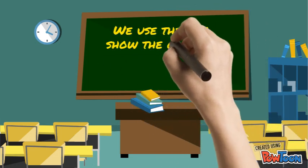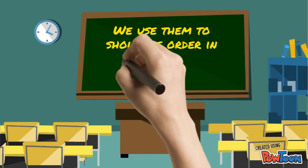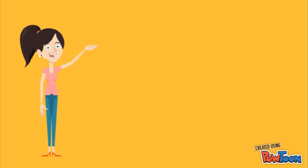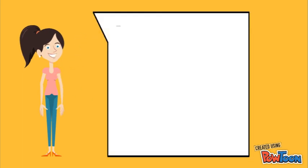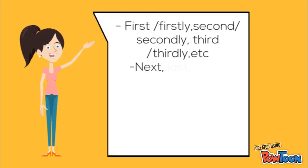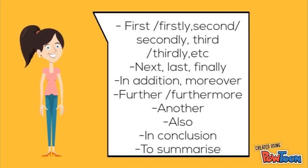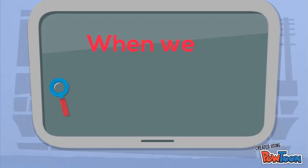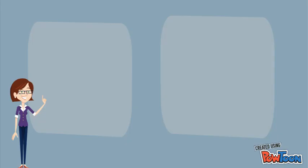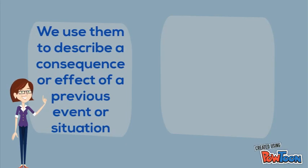We use them to show the order in which things happen. Here we have some of them. We also use them to describe a consequence or effect of a previous event or situation.